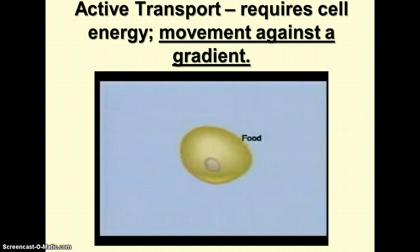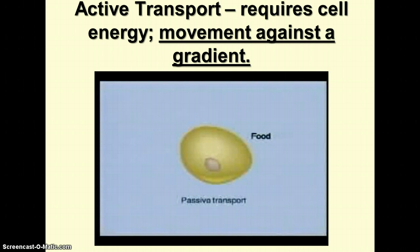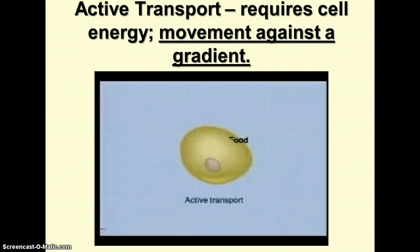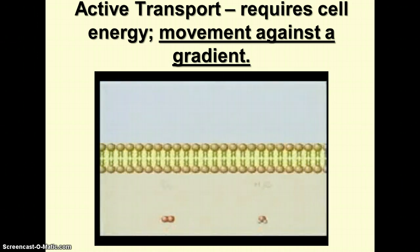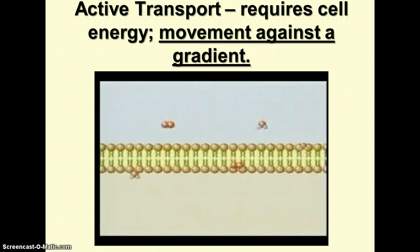To stay alive, a cell must exchange materials with its environment. Some materials move in and out of the cell by a process called passive transport. Other materials must be carried across in a process called active transport. The membrane of a cell is semi-permeable, meaning that some small molecules such as oxygen and water can diffuse across freely.